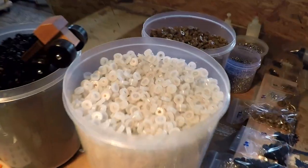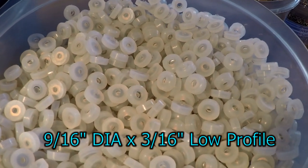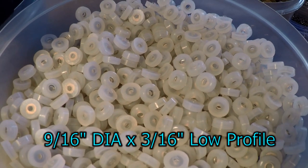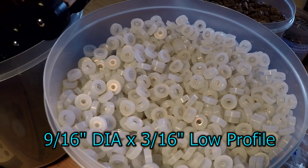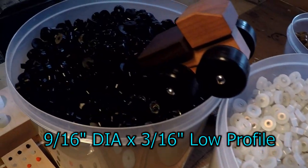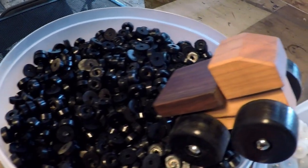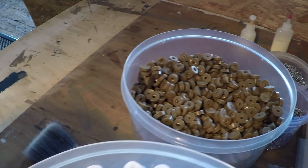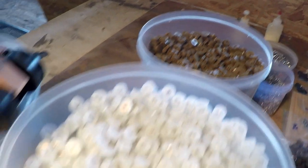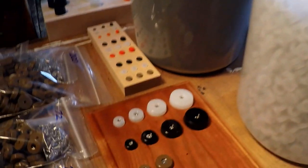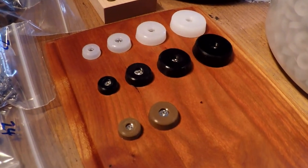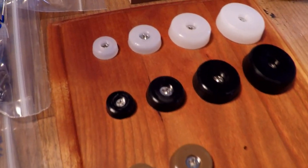This is the 9/16th diameter low-profile cutting board bumper feet, available in clear, black, and also the brown color. That completes my array of low-profile bumpers.